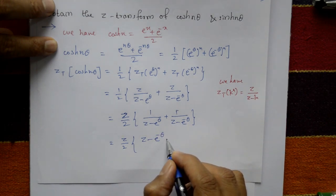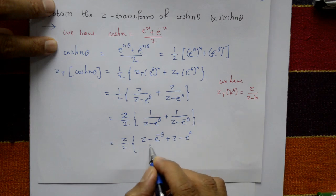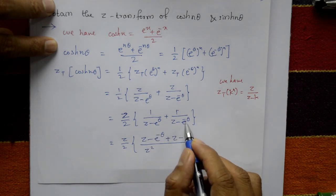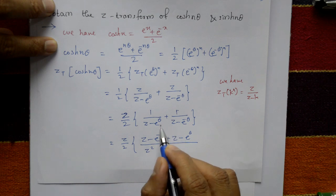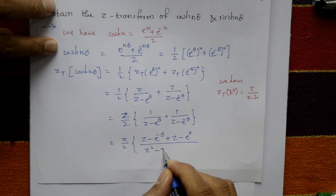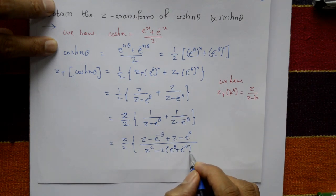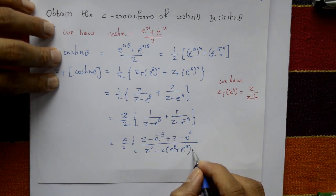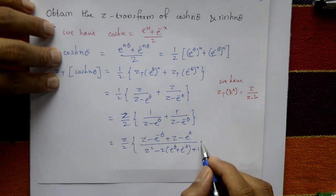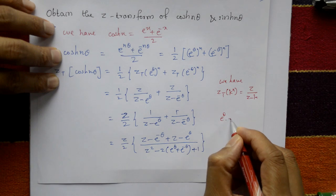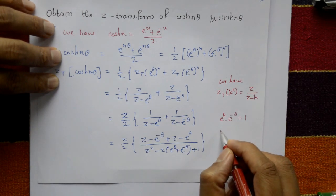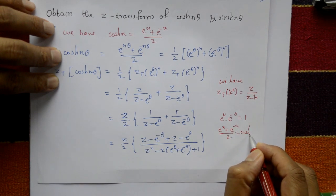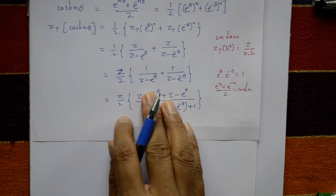Cross-multiplying and taking the LCM, the numerator becomes (Z - e^(-θ)) + (Z - e^θ), and the denominator is (Z - e^θ)(Z - e^(-θ)), which expands to Z² - Z(e^θ + e^(-θ)) + 1, since e^θ · e^(-θ) = 1. Also, (e^x + e^(-x)) / 2 = cosh(x).